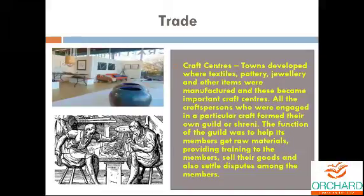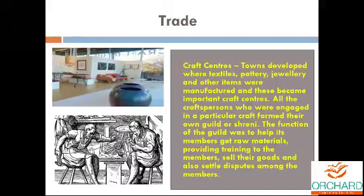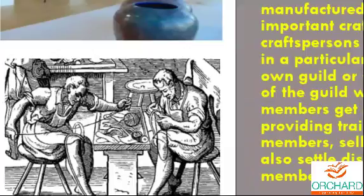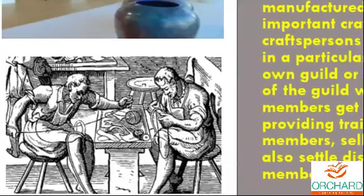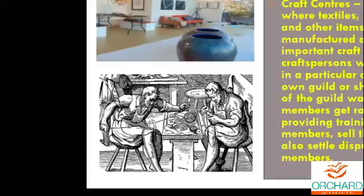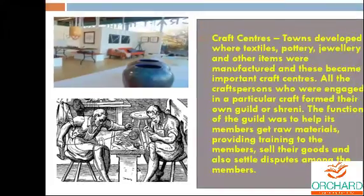Guilds are groups of people who used to make some materials. These guilds help the members get raw materials and train them on how to make products and sell goods. Whatever problems or disputes arise, they are solved among the members themselves. Here you can see the guilds — the group of people — how they make the products, train each other, and resolve disputes among themselves.